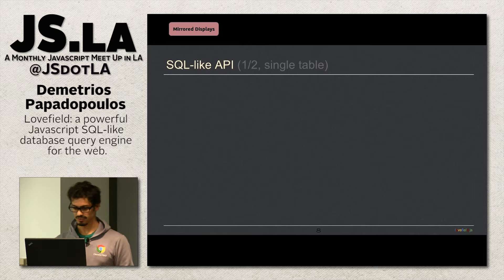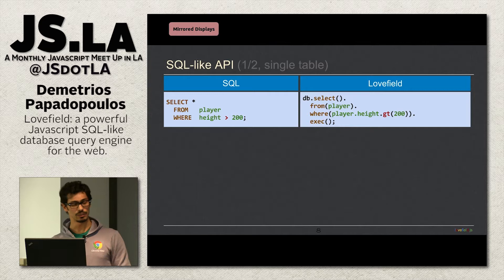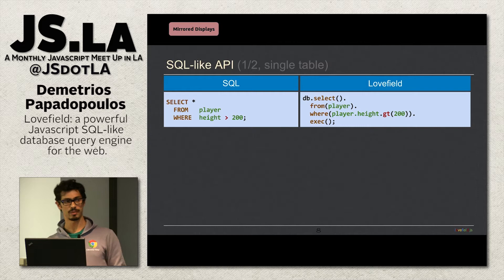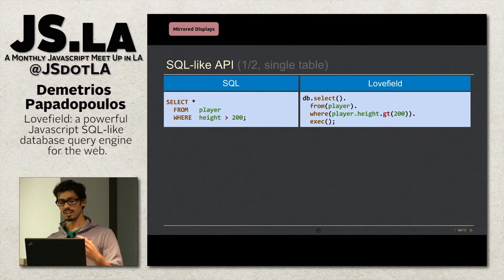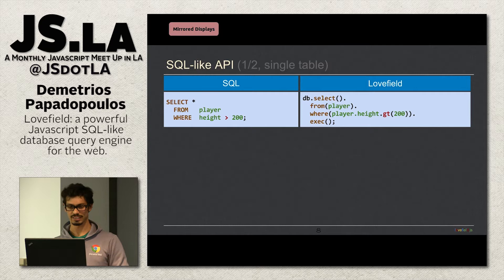Let's see how the API looks. I'm comparing SQL to Love Field. On the left: SELECT * FROM player WHERE height > 200. In Love Field: db.select().from(player).where(player.height.gt(200)).exec(). The color coding shows equivalent parts between the two APIs. The main difference: SQL is free text requiring a parser; Love Field uses declarative syntax — a collection of function calls using the builder design pattern. The exec() method executes the query and returns a promise fulfilled when results are available.